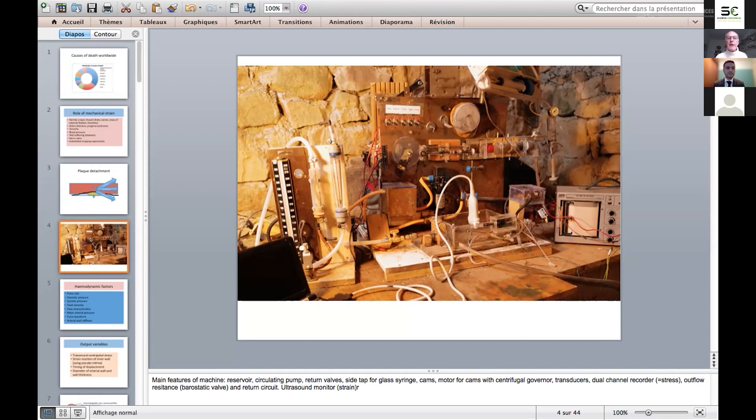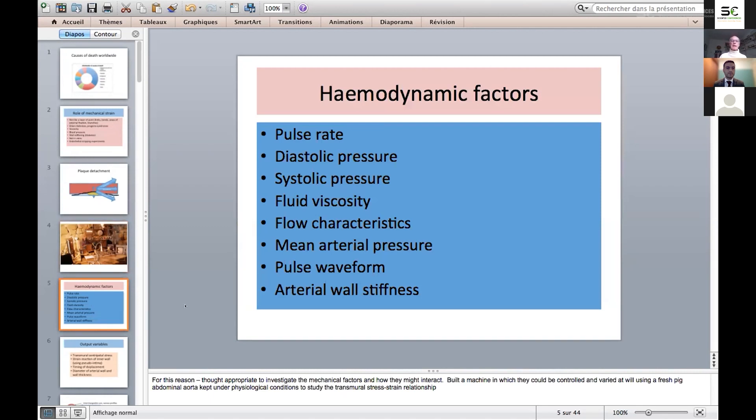The other thing about the machine is that we can change the pulse pressure waveform profile by driving a piston using different cams of different profiles to produce different sets of pulse pressure waves, ones with sharp peaks and ones with blunt peaks. We can vary the rate of pulsation, the diastolic pressure, the systolic pressure, the fluid viscosity, the mean arterial pressure, the pulse waveform, and the stiffness of the arterial wall through various ranges of stiffnesses.